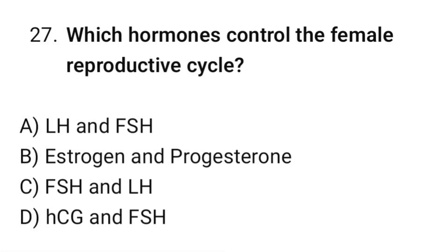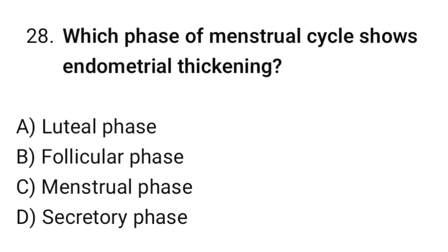Question No. 27: Which hormones control the female reproductive system? The correct option is C. FSH and LH. Question No. 28: Which phase of the menstrual cycle shows endometrial thickening? The correct option is A. Luteal phase.